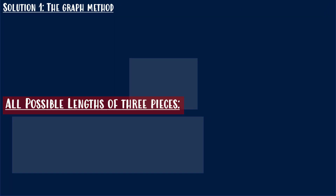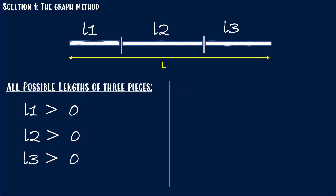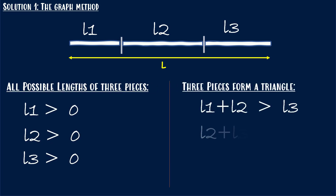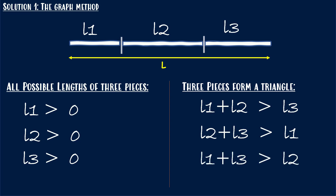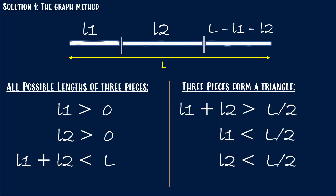The stick is broken into three pieces, and the length of each piece must be a positive value, so L1, L2, and L3 must each be greater than zero. To reduce the number of variables, let's represent L3 as L minus L1 minus L2. Substituting this into the equations and simplifying, then replacing L1 with X and L2 with Y gives us our updated equations.